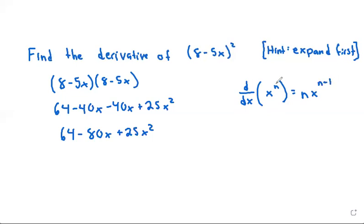Basically, you take the exponent, bring it down to the front and multiply it, then subtract 1 from the exponent.